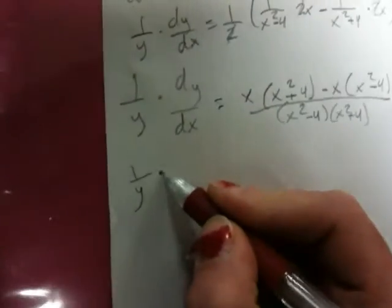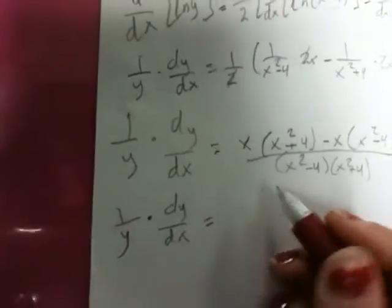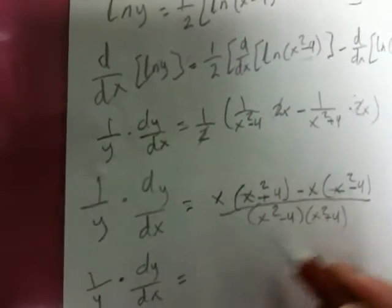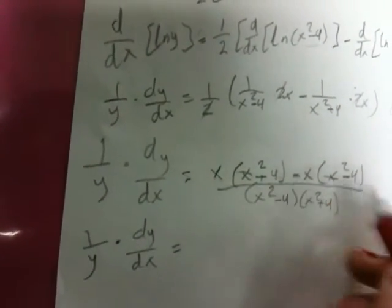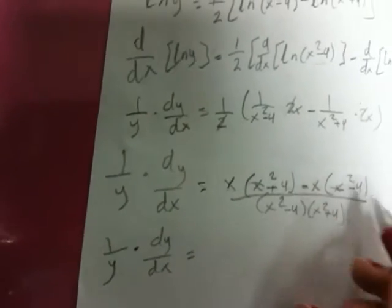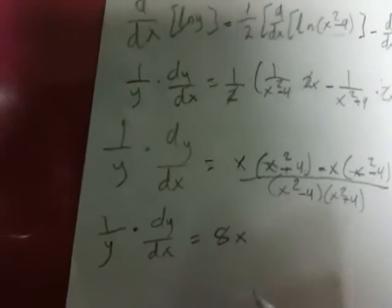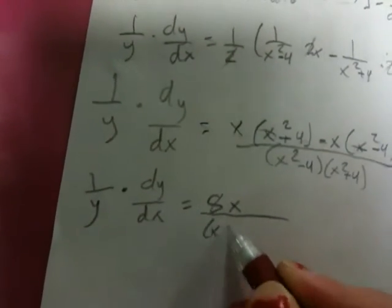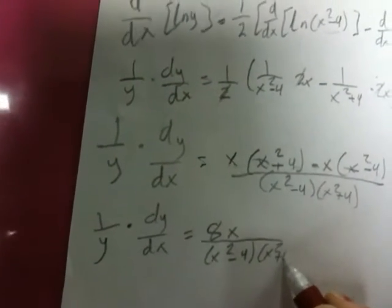Now we have 1 over y times dy/dx equal. We cancel the x squared terms because the positive and negative cancel. We add 4 plus 4, giving 8x. So the numerator becomes 8x, over (x squared minus 4) times (x squared plus 4).